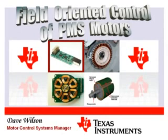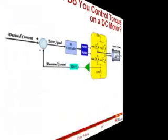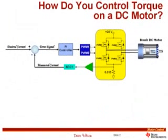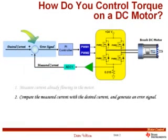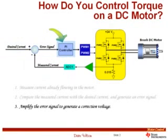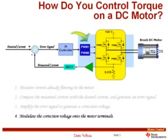To introduce the topic, let's first look at how torque is controlled in a DC machine. On any electrical machine, in order to control torque we must control the current. We divide the process into four distinct steps. Step one: measure the current already flowing in the motor — here shown via a shunt resistor feeding an A-to-D converter. Step two: compare the measured current with the desired current and generate an error signal. Step three: amplify the error signal to generate a correction voltage — if current is too low, increase voltage; if too high, decrease it. Step four: modulate the correction voltage onto the motor terminals.